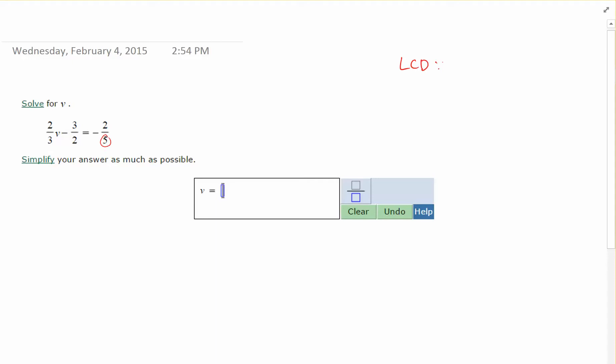Find a value that 3 and 2 and 5 will all divide into. You could do your times tables for 5, or you could also multiply all of the denominators together. 3 times 2 is 6, and 6 times 5 is 30. So 30 would work as the least common denominator.